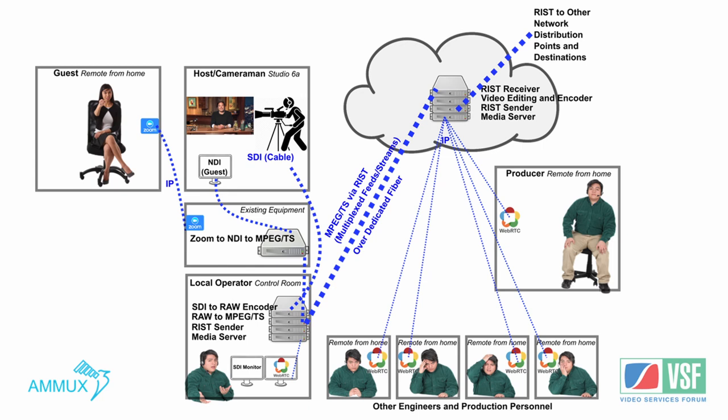And we feed those to two different WebRTC servers. The first WebRTC server is on-site — that's the low-latency one. Then we create a second copy of the transport stream of all this and send it over RIST to another cloud-based WebRTC server farm.